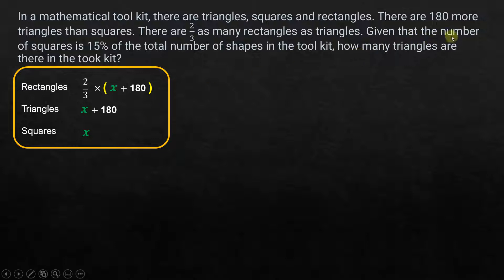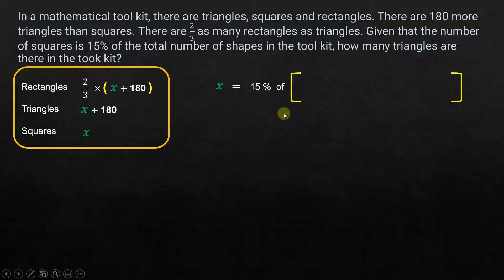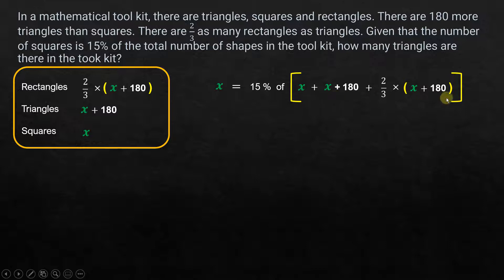The next statement says the number of squares is 15% of the total number of shapes. The number of squares is x, so: x equals 15% of (x plus x plus 180 plus two-thirds times (x plus 180)). This is the total number of shapes — squares plus triangles plus rectangles.